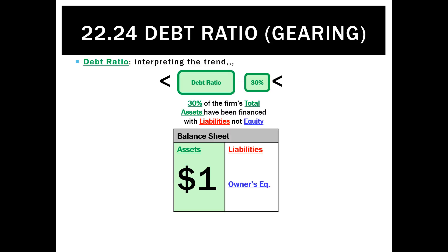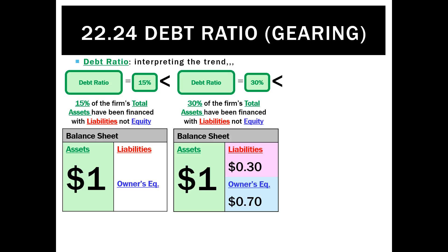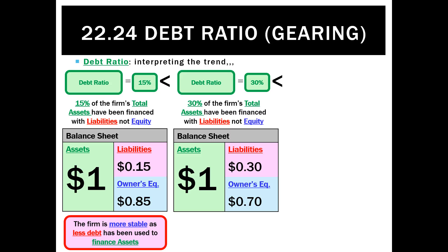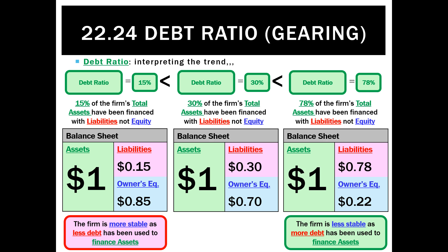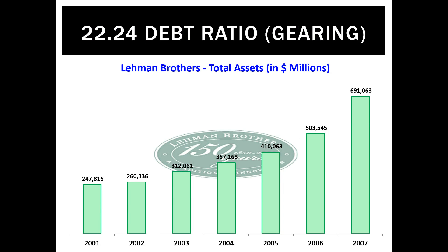If that ratio goes down from 30% — meaning liabilities represented 30 cents of every dollar of assets — down to 15%, so liabilities are now only 15% of total assets and owner's equity is 85%, that's a good trend. The business is more stable, has less debt, and its assets have been purchased with less external funds. If the debt ratio went up to 78%, that's a bad trend. Liabilities now represent 78 cents in every dollar of assets, leaving only 22 cents of owner's equity. The firm is less stable and more debt has been used to finance its assets.